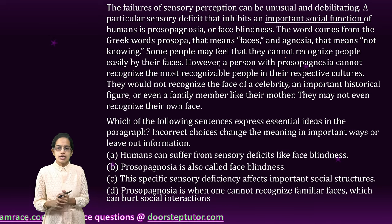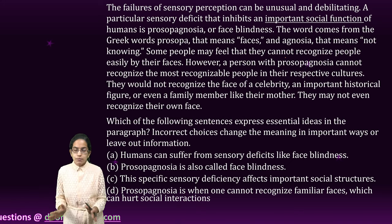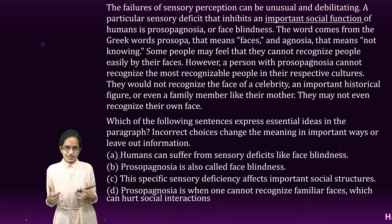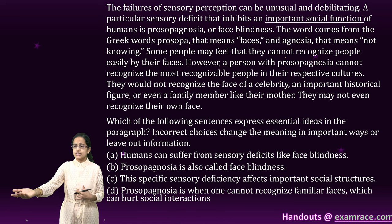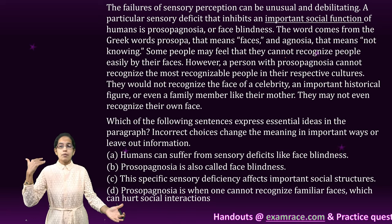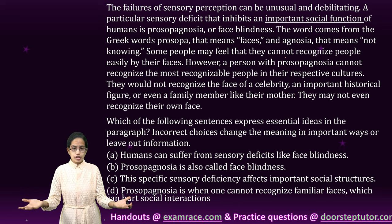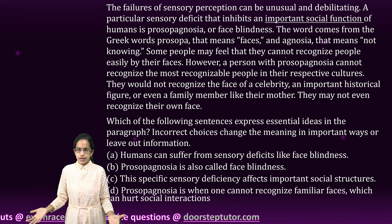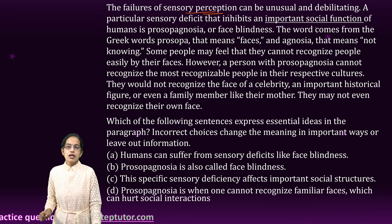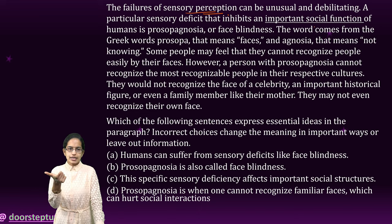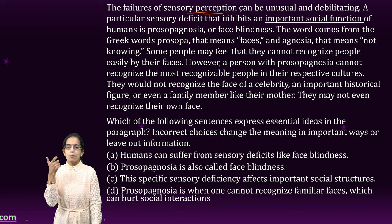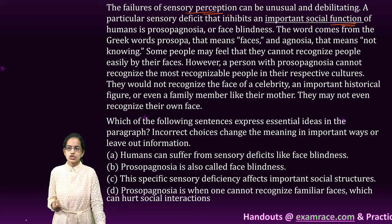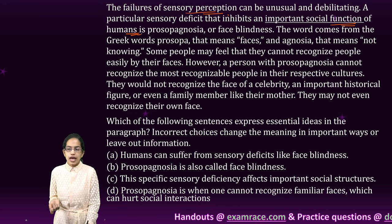The first multiple select question talks about prosopagnosia, which is face blindness. Even if your parents, a major celebrity, or a scientist from your neighborhood comes in front of you, you won't recognize them. It is a failure of sensory perception — specifically, a sensory deficit that inhibits an important social function of humans.